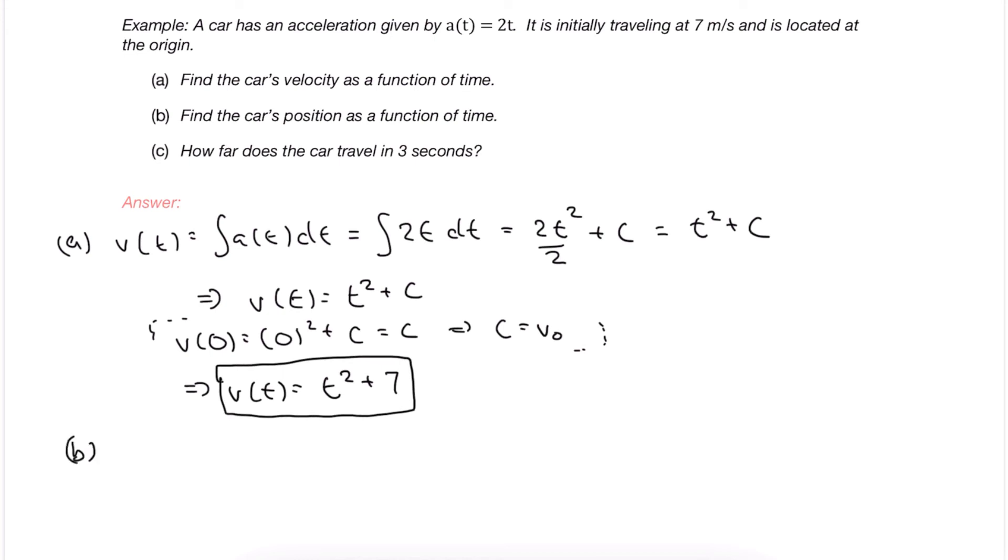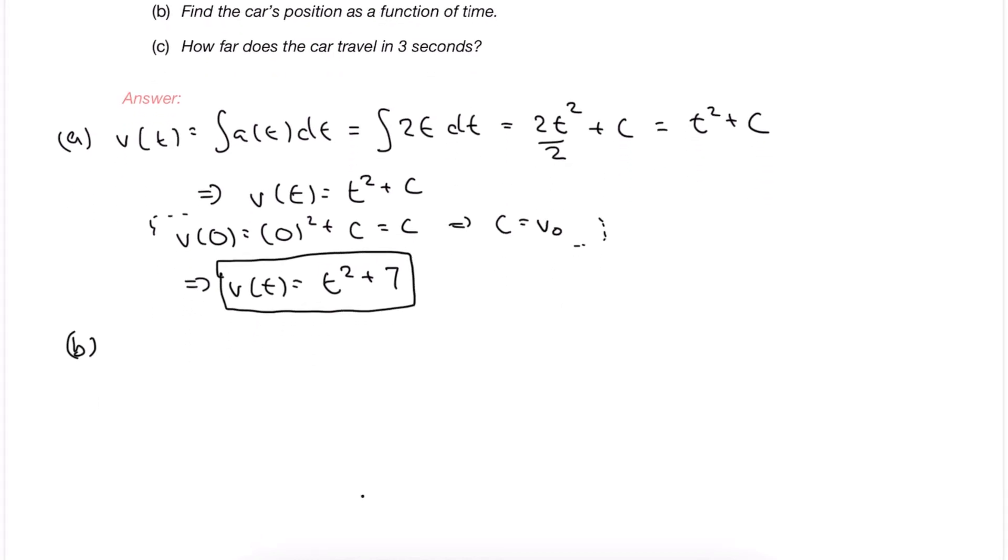Now that we have our velocity formula, we can find the formula for the position. We need to take the anti-derivative of velocity because velocity is the derivative of position, so position is the anti-derivative of velocity.